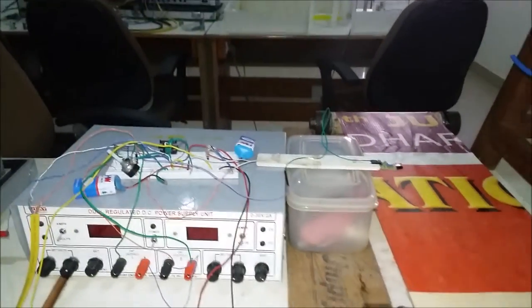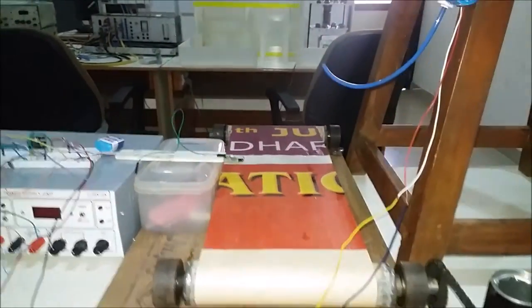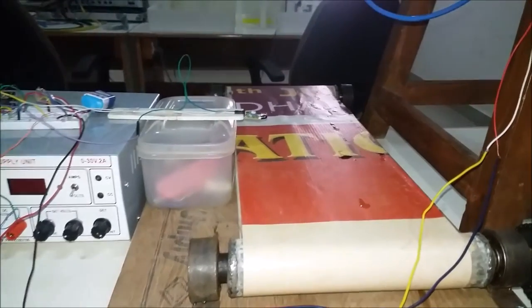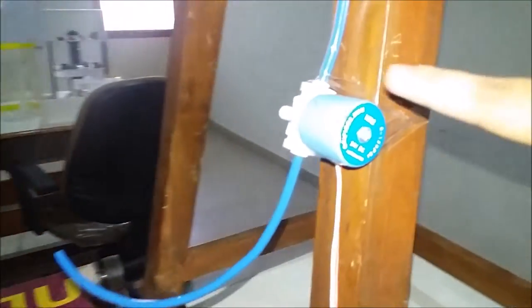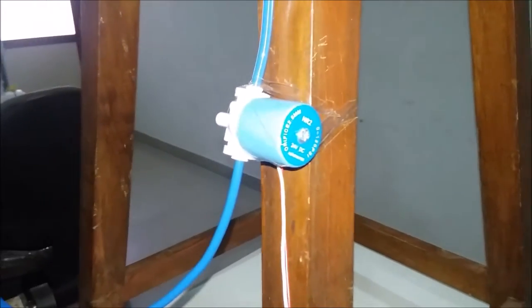And the two outputs are one is the conveyor belt. This is the conveyor belt and another one is the solenoid valve in order to fill the bottle.